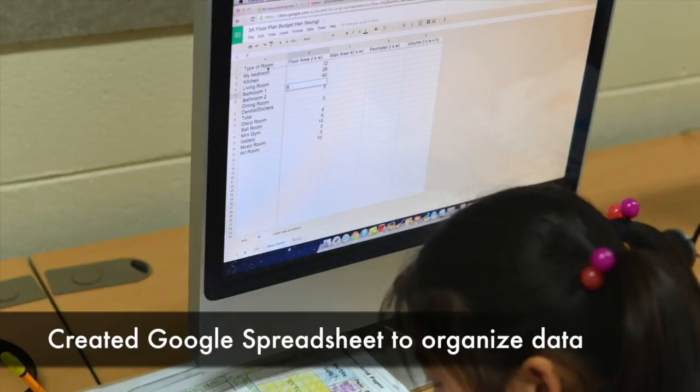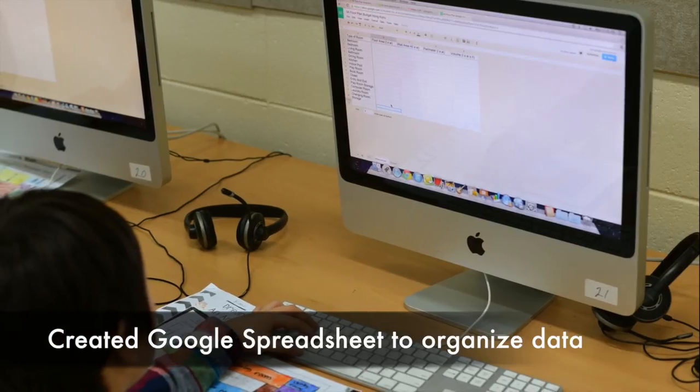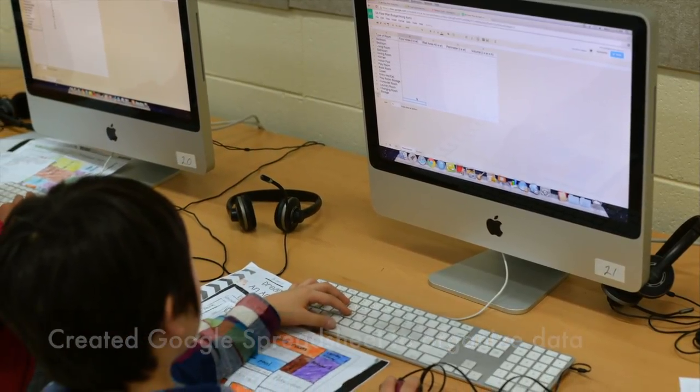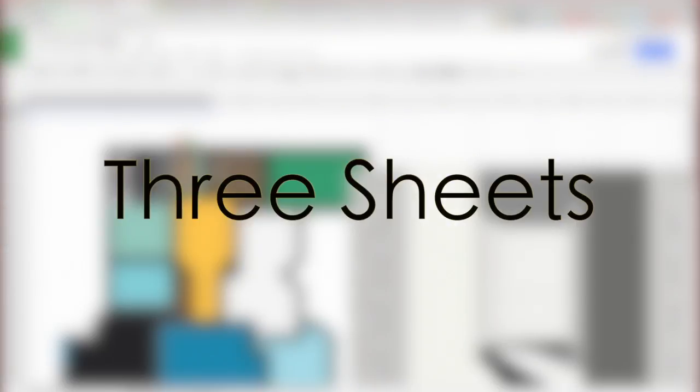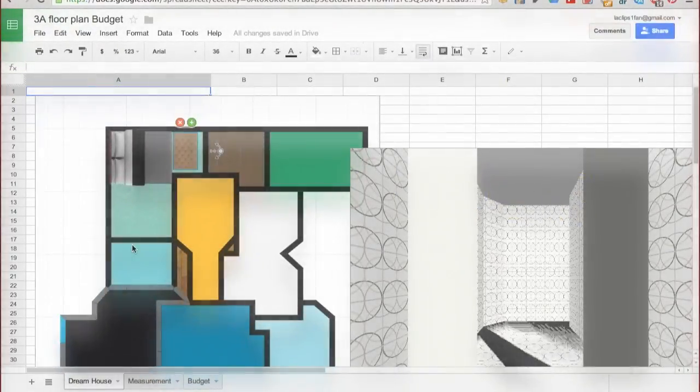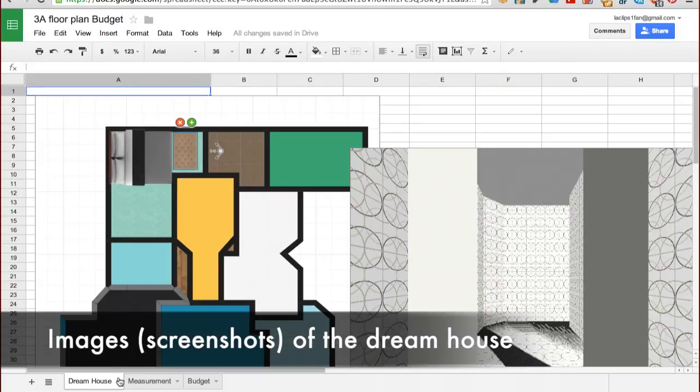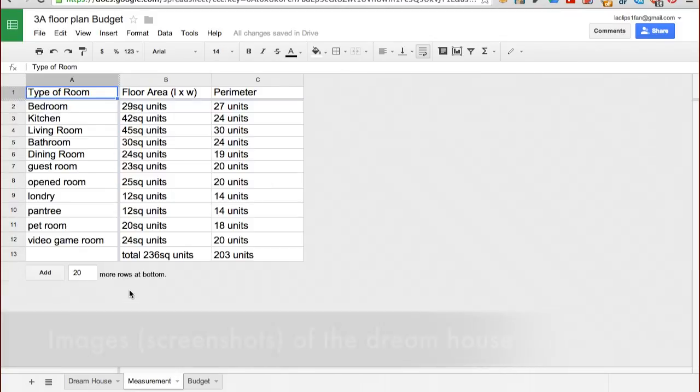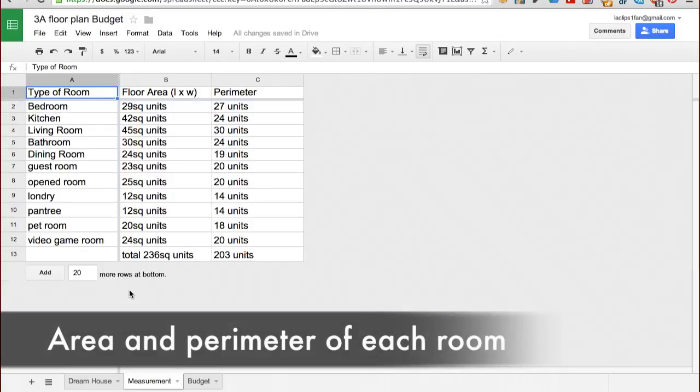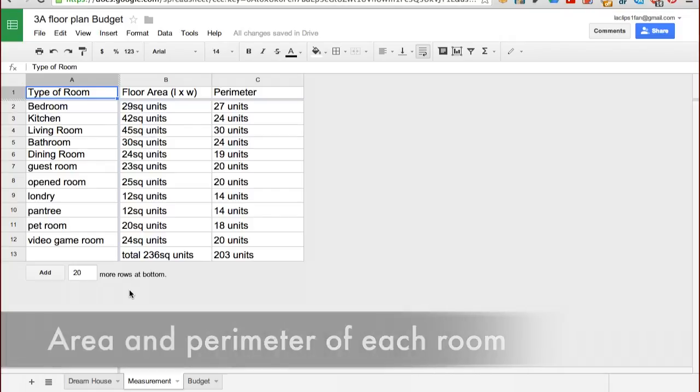Students also created a Google spreadsheet to organize their measurement and budget data. The spreadsheet consisted of three sheets. The first sheet included images of the dream house. The second sheet contained the measurements of the home, specifically the floor area and perimeter of each room.